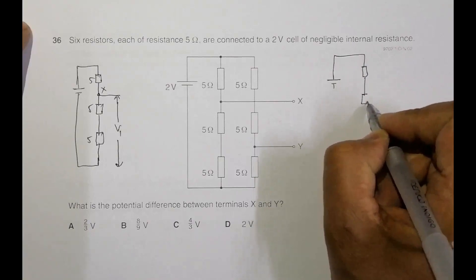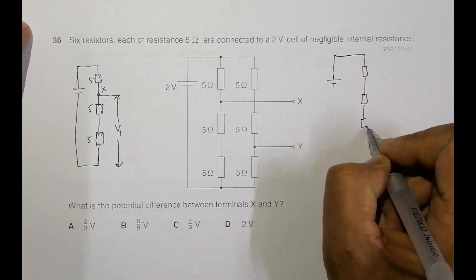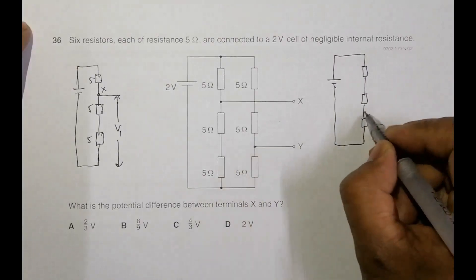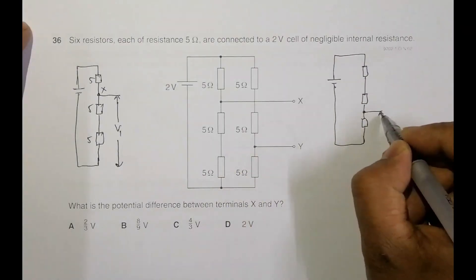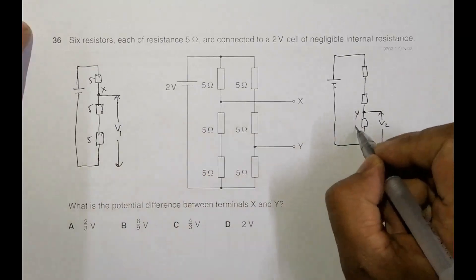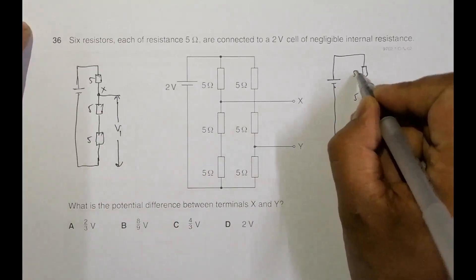This. So this is point Y. So this is point Y. And we have to find this voltage which is V2. This is point Y. It's 5 ohm, 5 ohm and 5 ohm.